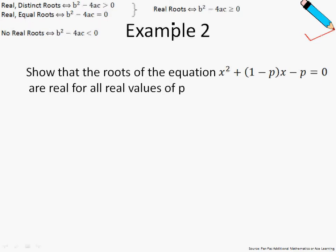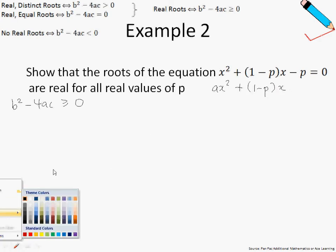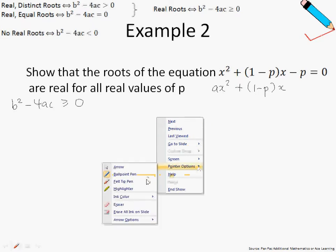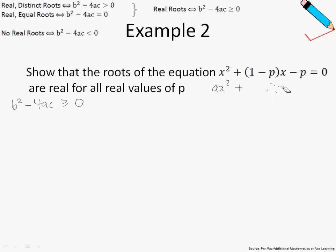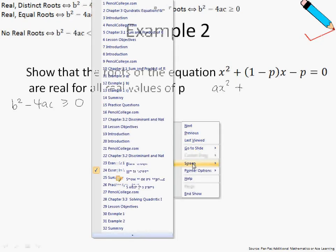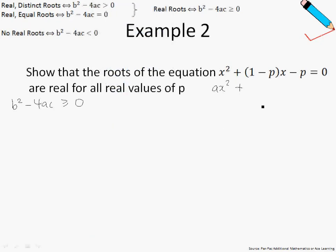If we want real roots, we are looking at the case where the discriminant is greater than or equal to 0. Before performing substitution, let us identify A, B, and C. The fundamental equation is always in the form Ax squared plus Bx plus C.